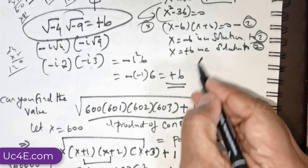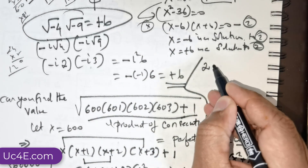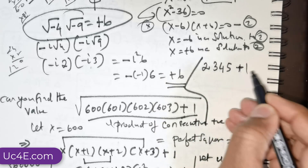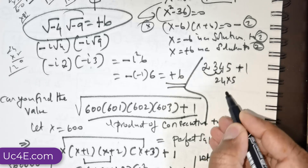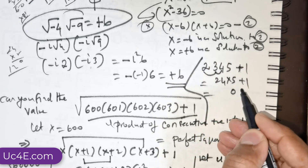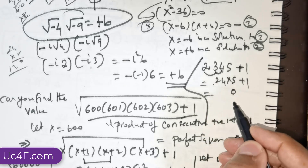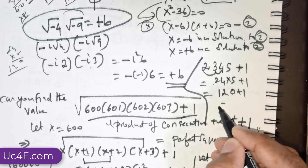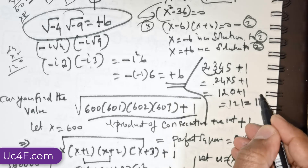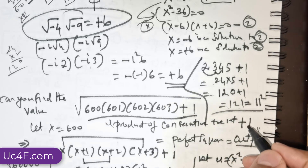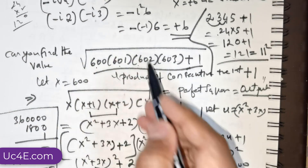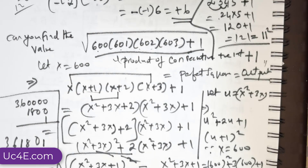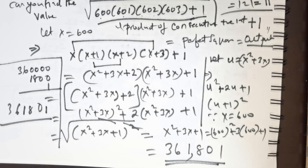To verify, take 4 consecutive integers: 2 × 3 × 4 × 5 + 1. That gives 120 + 1 = 121, which is 11² — a perfect square. So no matter which consecutive integers you choose, adding 1 to their product yields a perfect square, and applying the square root gives the answer. Thank you everybody, enjoy your night.